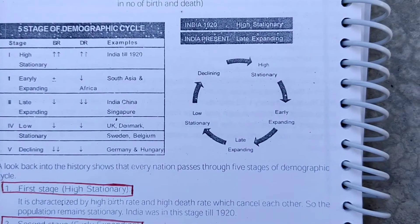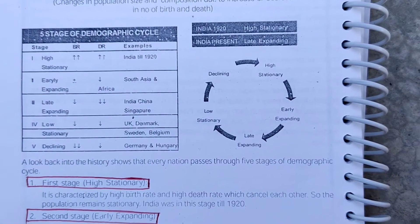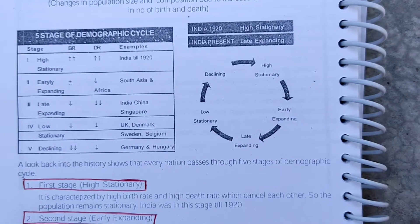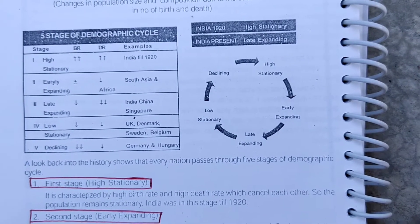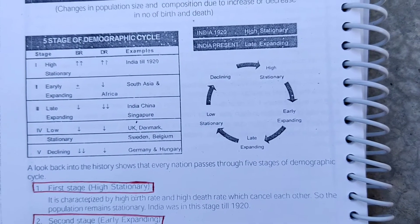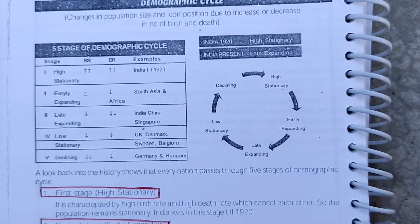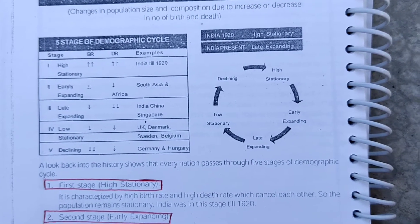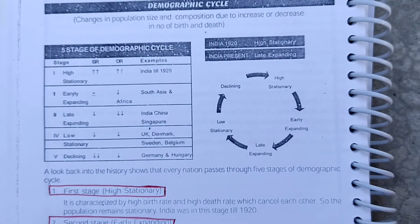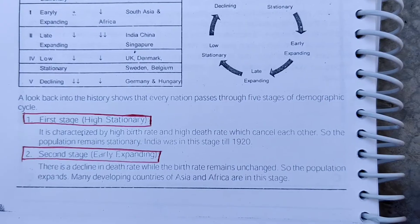In the demographic cycle, there are a total of five stages: High Stationary, Early Expanding, Late Expanding, Low Stationary, and Declining. We will now study each stage one by one, so please focus on this topic.